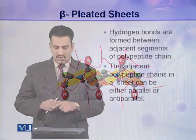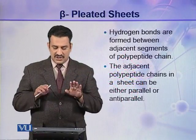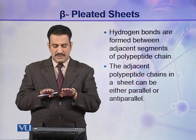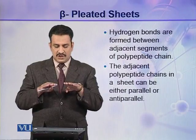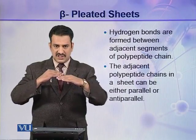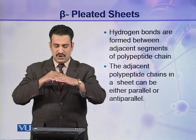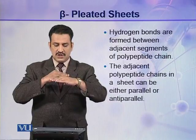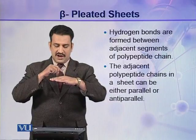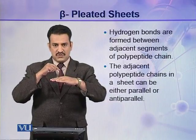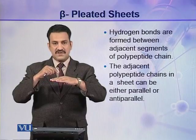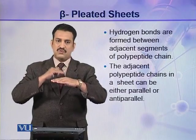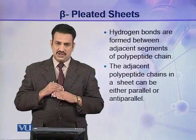Hydrogen bonds are formed between adjacent segments of polypeptide chains. When two zigzag polypeptide chains come close to each other, hydrogen bonds are formed between different segments of these two polypeptide chains.